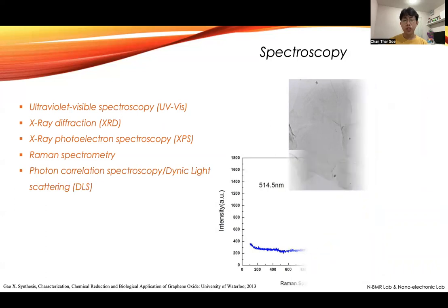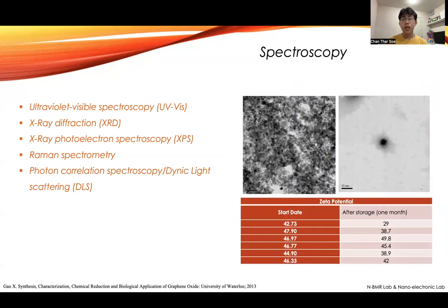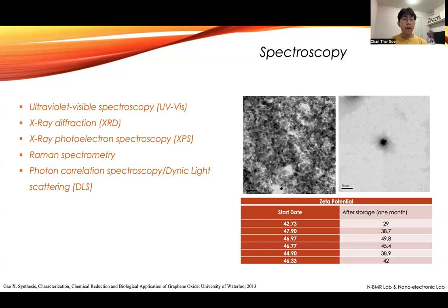The next one is Dynamic Light Scattering (DLS). From my experience, we use dynamic light scattering to determine the hydrodynamic size of nanoparticles and also the particle size distribution. In my research, I used DLS to synthesize nanoparticles and then did polylactic acid coating studies. After that, I checked the stability of the nanoparticles — from the first day of synthesis to after one month — how much stability there is, which is given by the charge on the surface of the nanoparticle. That is how you characterize nanoparticle stability using dynamic light scattering.